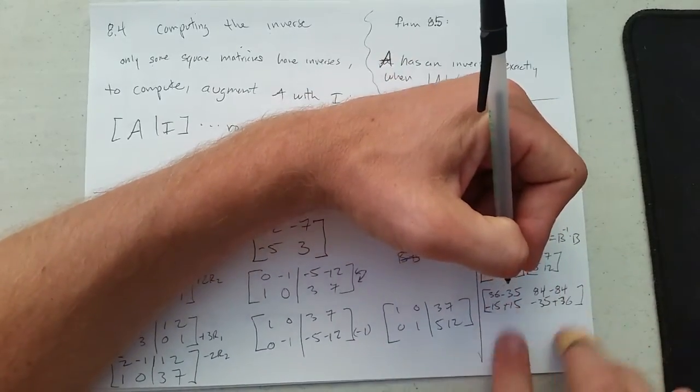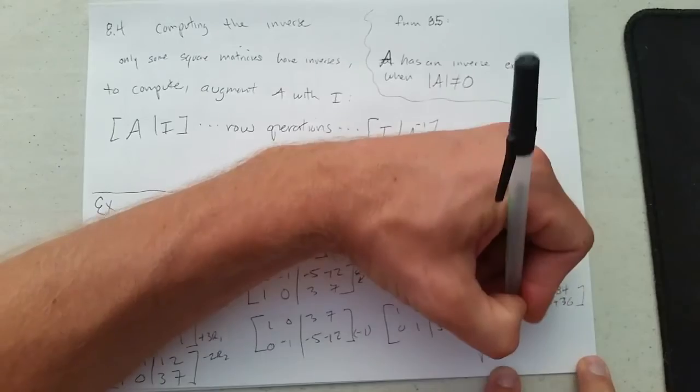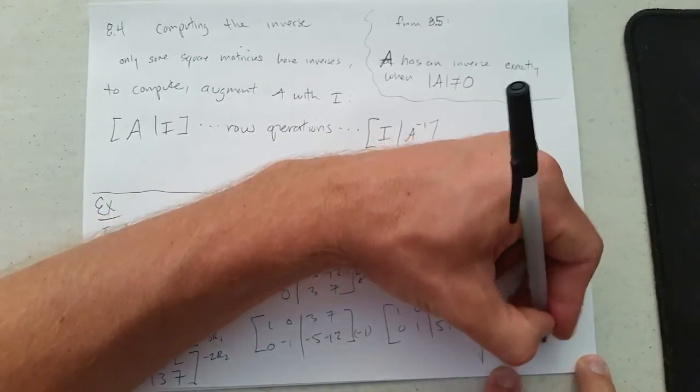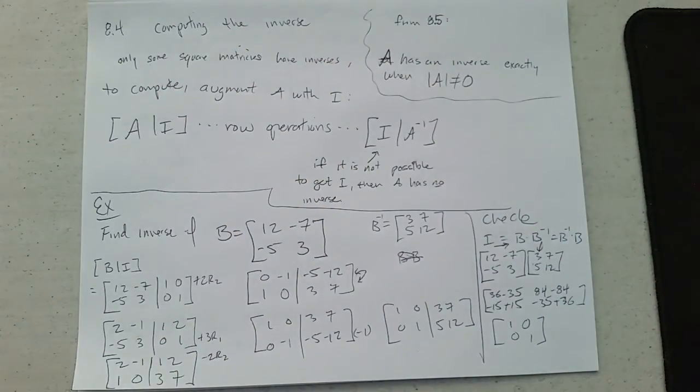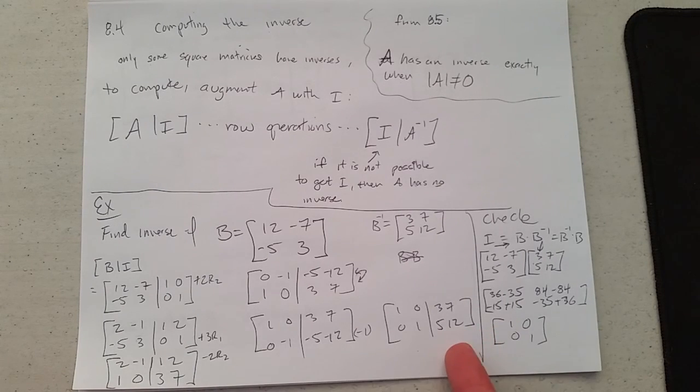So those are zeros. 36 minus 35 and negative 35 plus 36. And we get our identity matrix right there. Now generally, you're going to have fractions. I carefully chose an example to avoid fractions.